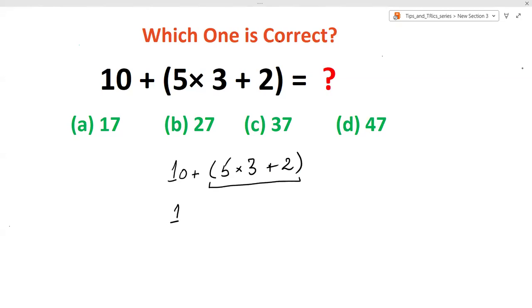In the brackets, according to BODMAS, we have to do multiplication first. So 5 multiplied by 3 gives us 15 plus 2 as it is. Now again, the bracket didn't solve completely, so 10 as it is plus 15 plus 2 gives us 17.